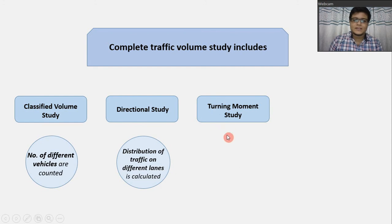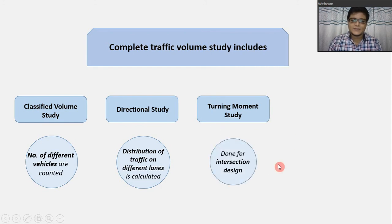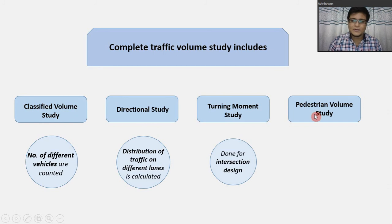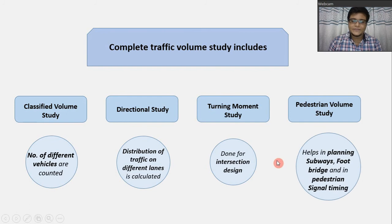The third type of traffic volume study is the turning movement study. Basically, this type of study is done for intersection design. The last type of study is the pedestrian volume study, which helps in planning subways, footpaths, footbridges, and pedestrian signal timing.